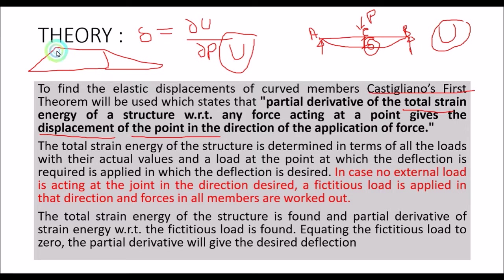Suppose you are analyzing a truss using Castigliano's first theorem — a simply supported truss — and you want to determine the deflection or displacement at certain members. If there is no applied load, that load is zero, so you just assume a fictitious unit load and by using that load you can calculate the deflections in those members. This is the theory portion, which you can study in detail in the structural analysis subject.